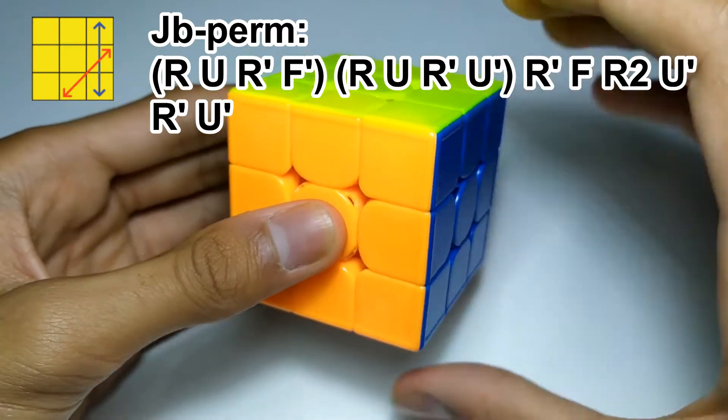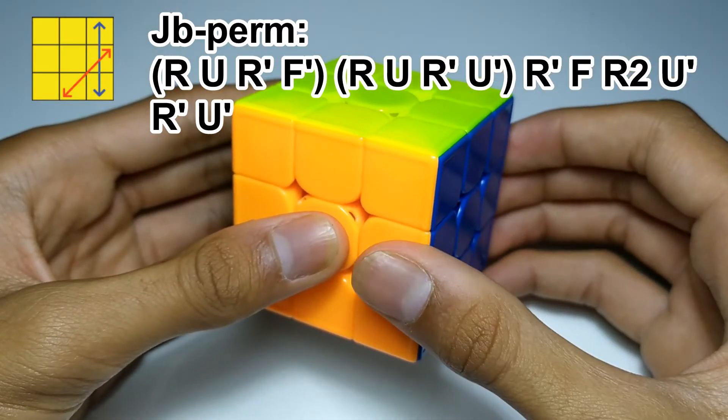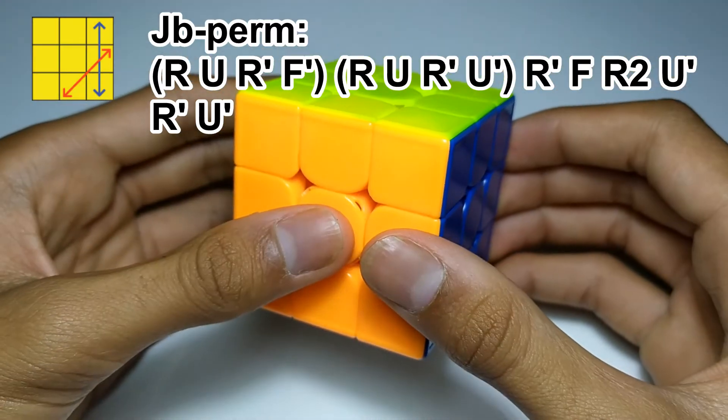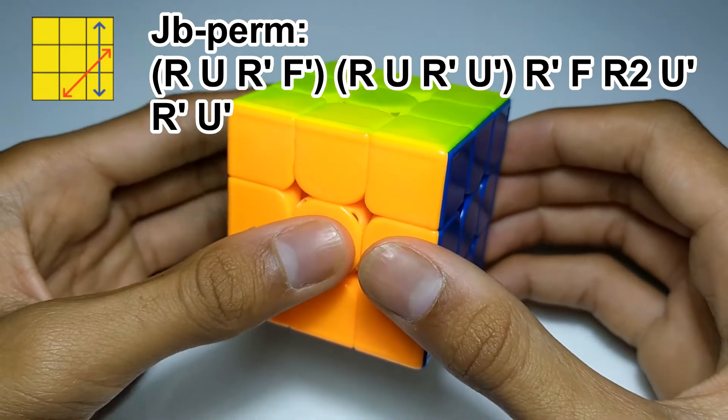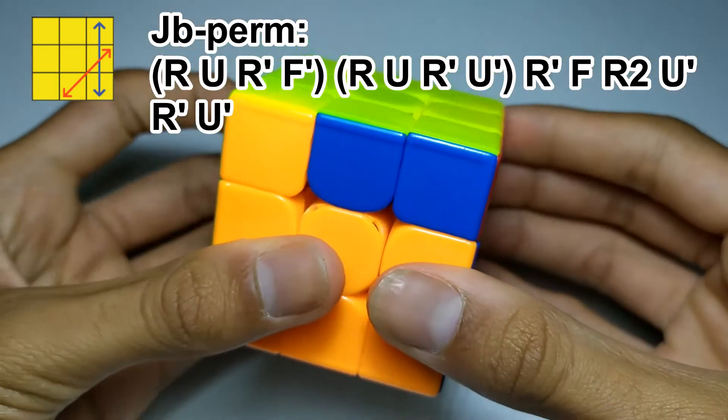The reason is because the re-grip at the beginning is slower than doing one move. So, this will be doing the algorithm as fast as I can with the starting re-grip, and without it.